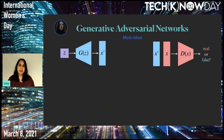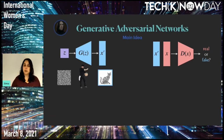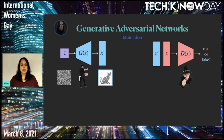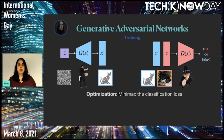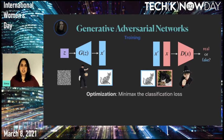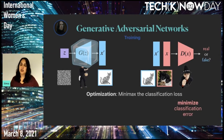If we formalize this, our generator is a learned network G that produces an image given a random input C. And the art critic or discriminator is another learned network D that, given two images, classifies them as real or fake. This is being optimized with minimax on the classification loss, meaning the generator and discriminator have opposite objectives and they take turns training. When D is being trained, G is fixed and we minimize the classification error.